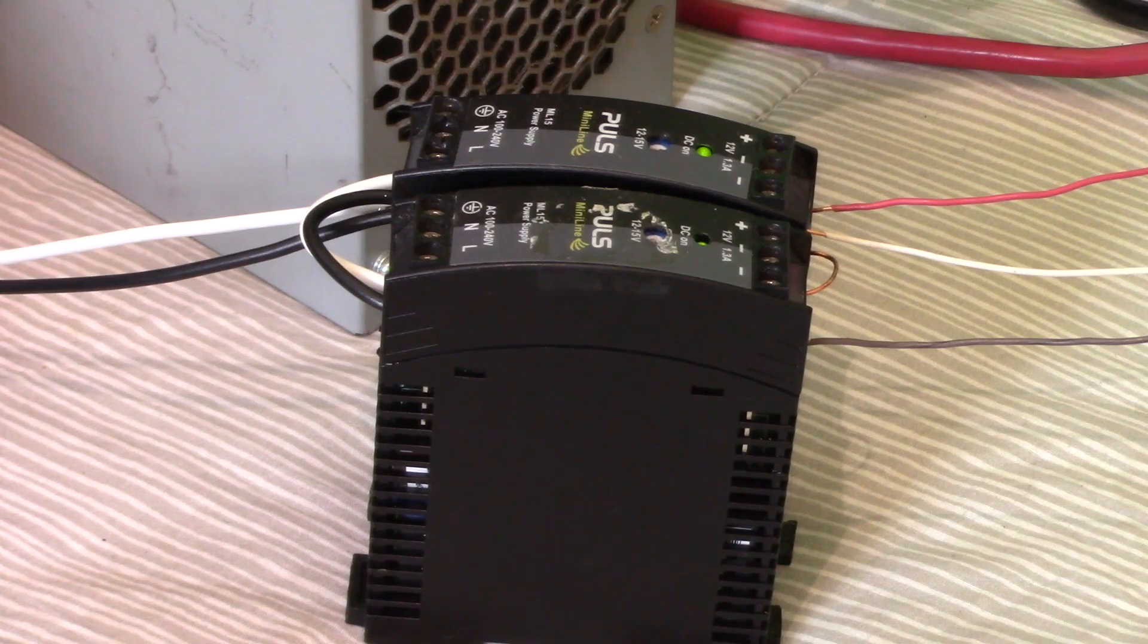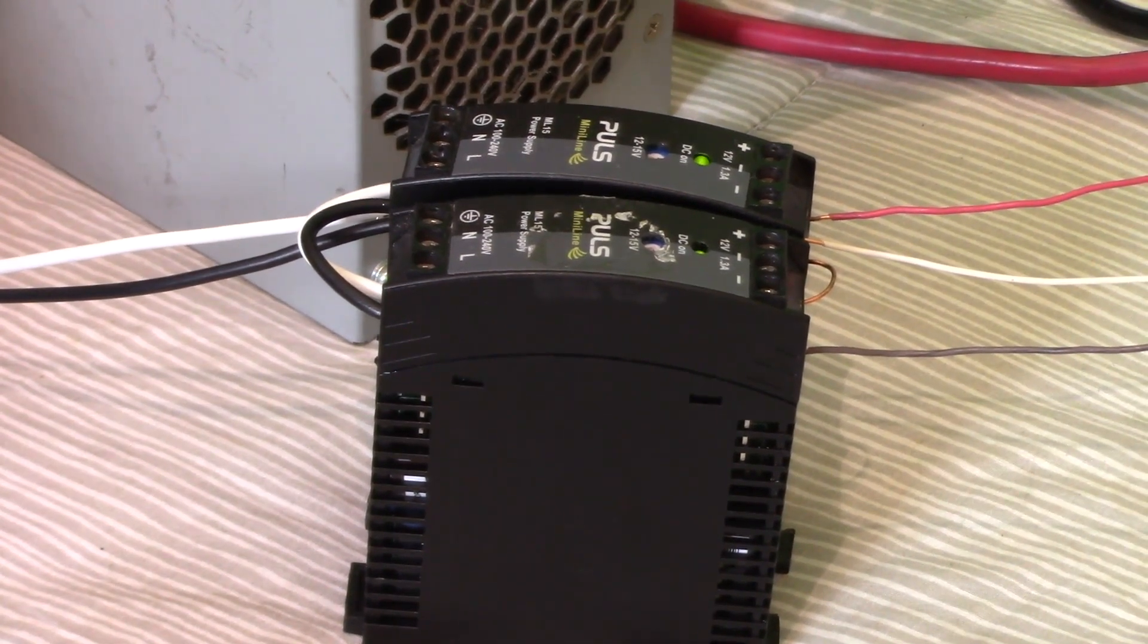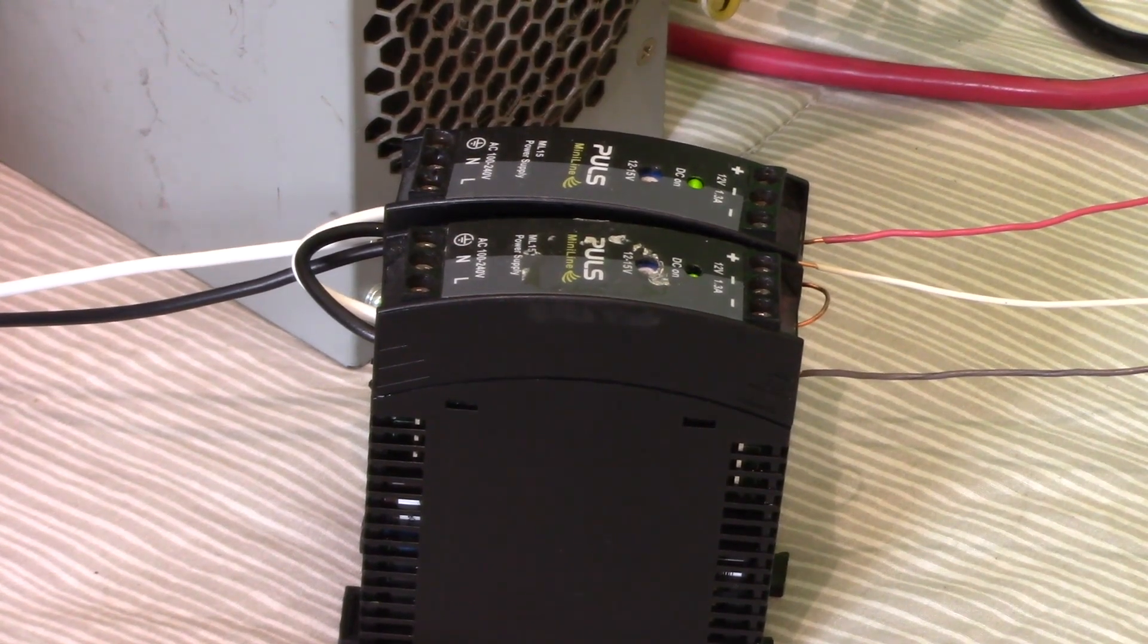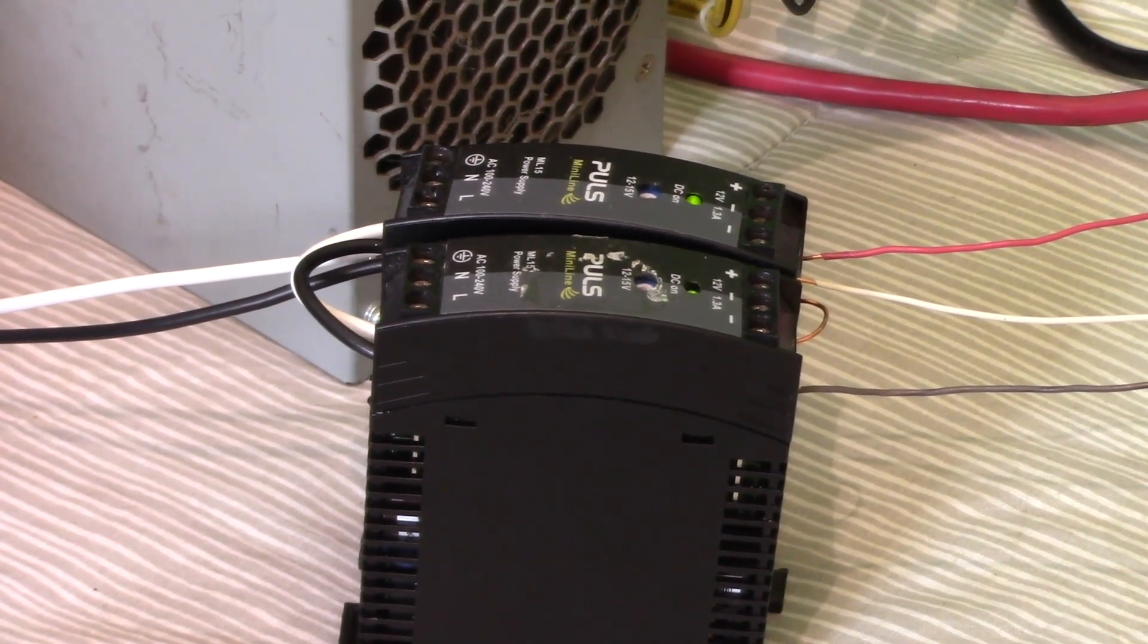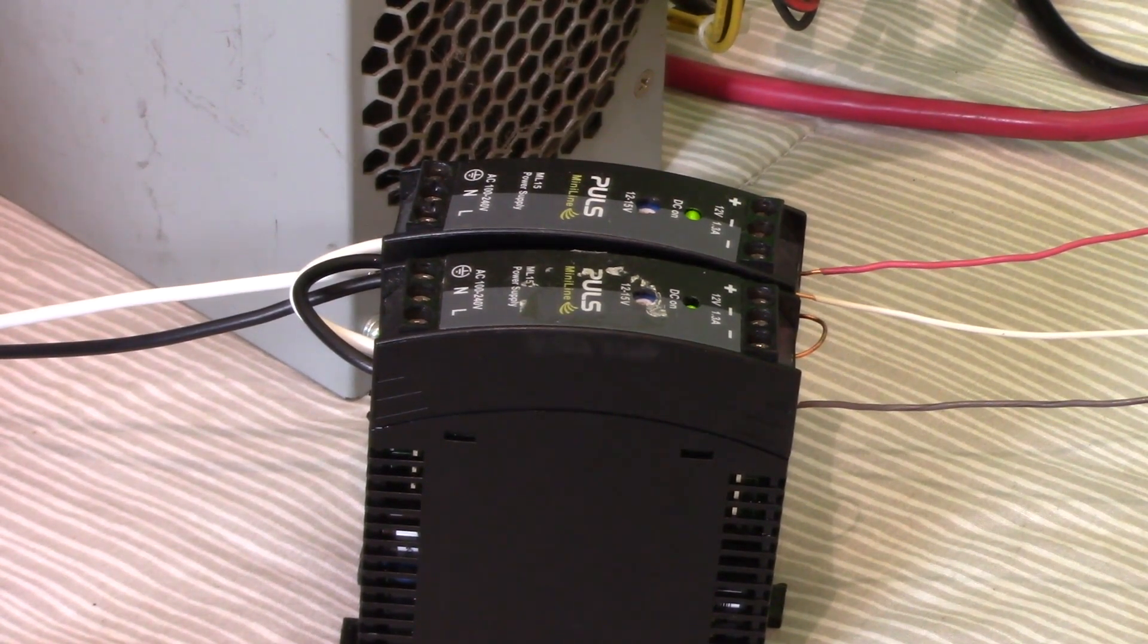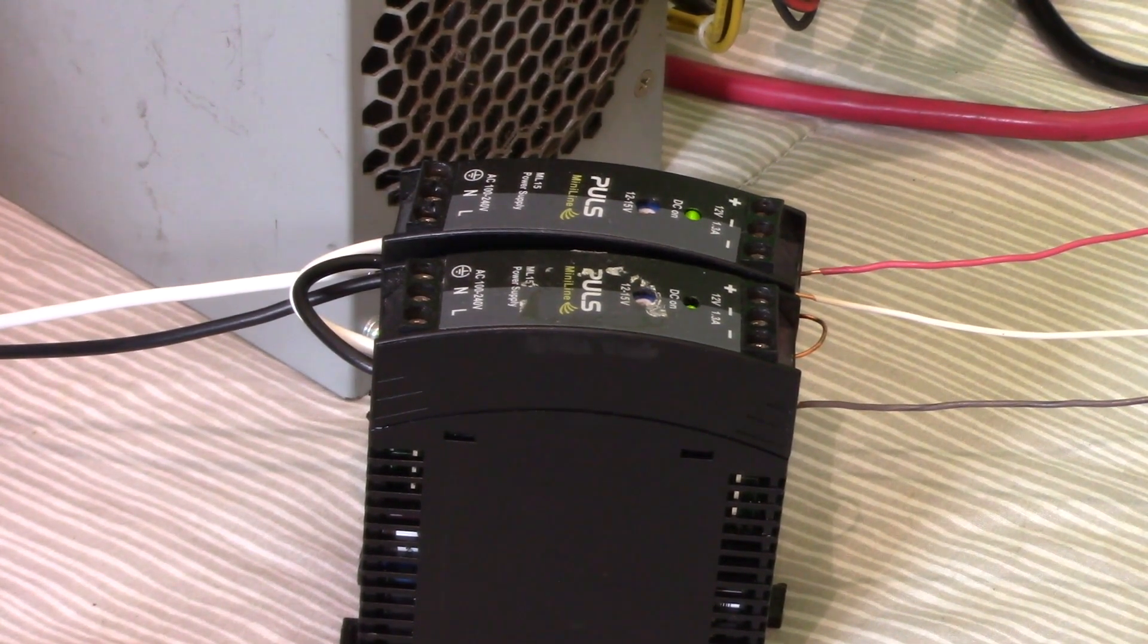Now these are the two power supplies that I'm using. These are the Pulse ML15, I believe they are. So those are isolated power supplies. They just output 15 volts and I've got the two of them in series for negative gate drive. So one of them will send a 15 volts on signal and the other one is going to send a 15 volts off signal. So 30 volts in total.